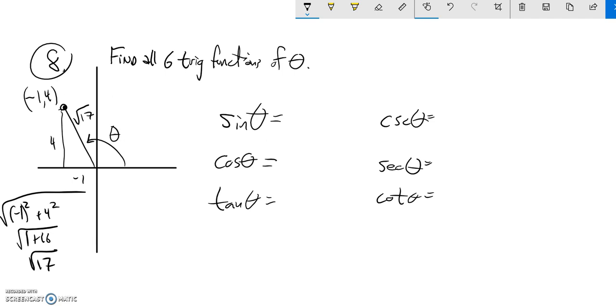Sine is about height, so sine is Y over the radius. That's four over the square root of seventeen. But I can't leave that root seventeen in the bottom, so I multiply by this version of one, giving me four root seventeen over seventeen. So there's my sine value, four root seventeen over seventeen.